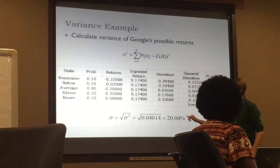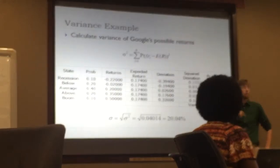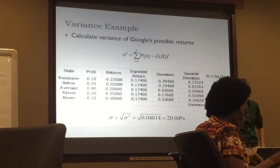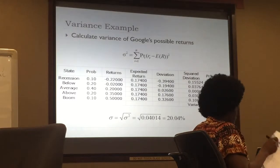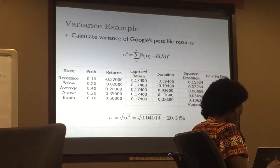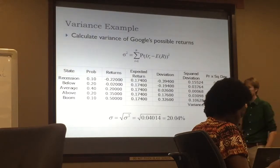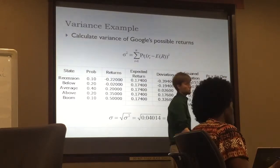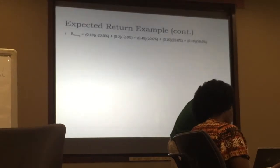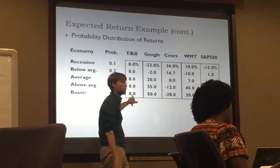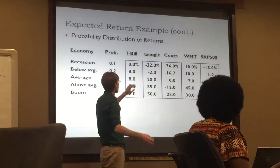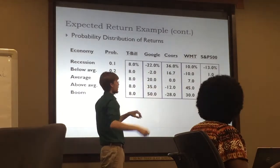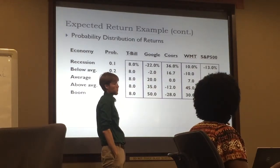More intuitively, this is just a measure of uncertainty — how much uncertainty is there in investing in Google versus other assets? If we did the same calculation for the T-bill, the standard deviation would be zero, because there's no uncertainty whatsoever — each outcome equals the average. So the higher the standard deviation, the higher the uncertainty. That's exactly what we're trying to capture.